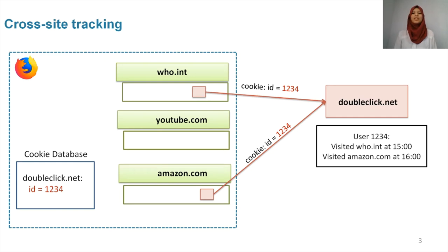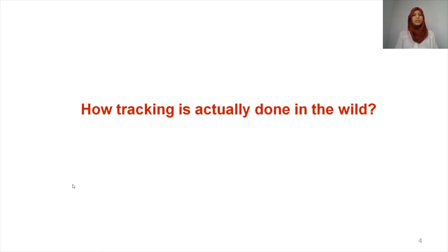Basically, DoubleClick is recreating part of the user's browsing history on what we refer to as the user's profile. The collection of this data will improve the quality of ads. Companies may offer you products you didn't even know you were interested in before, which is very profit-making for advertising companies, but it's very intrusive for the user's privacy. In order to collect this data, companies can perform multiple and complex tracking behaviors. So how is tracking actually done in the wild?